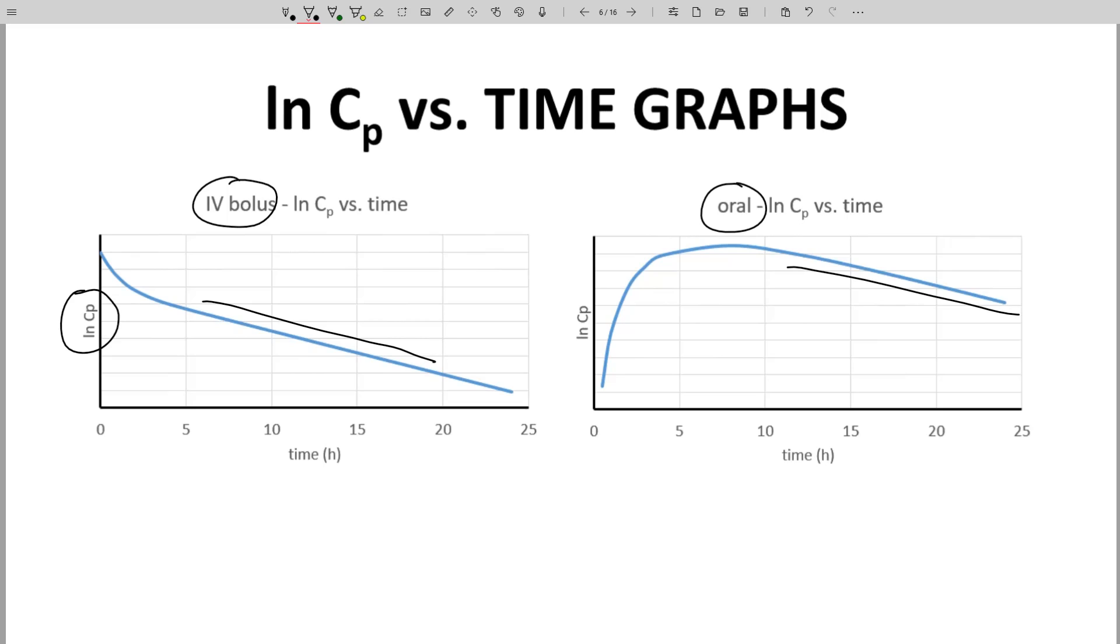When examining CP time data, it is important to check the y-axis of the graph and to determine whether the y-axis is linear CP, which we saw on the previous slide, or logarithmic, either natural log.